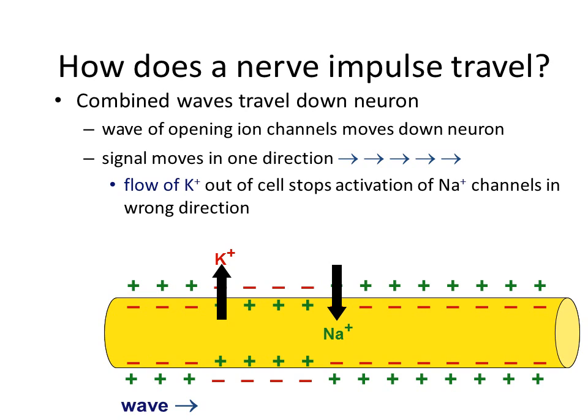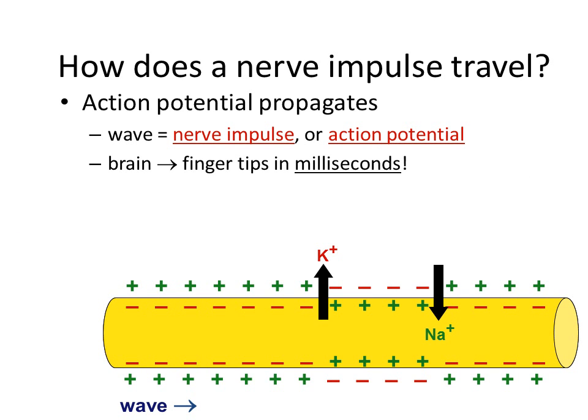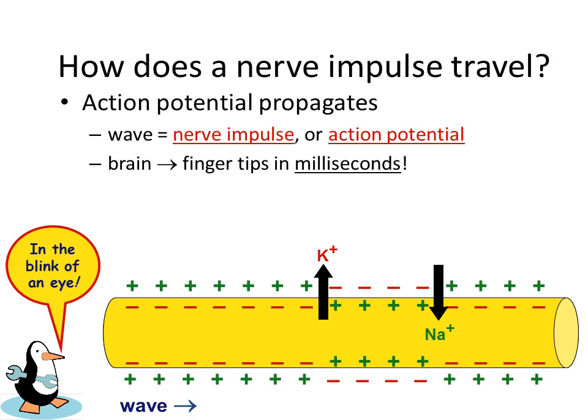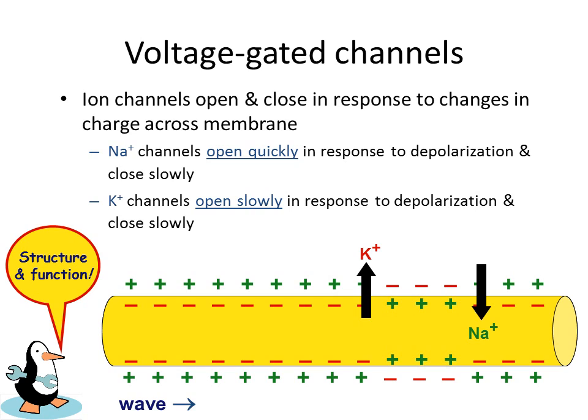Remember, we want the signal to go from the dendrites to the axons to the synapse. As the action potential is propagating or moving down the line, we have a wave — what we call a nerve impulse or action potential — which happens in a millisecond. The potassium and sodium channels are voltage-gated channels, and these ion channels open and close in response to changes in charge across the membrane. The sodium channels open quickly in response to depolarization and close slowly, while the potassium channels open slowly in response to the change in charges and also close slowly.